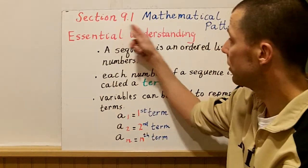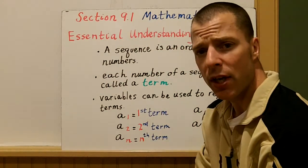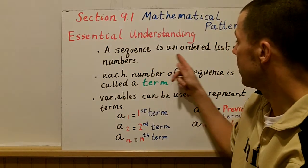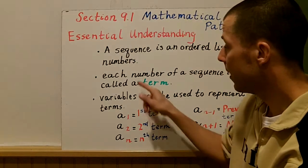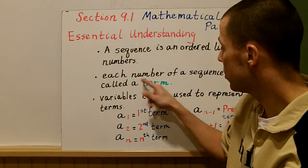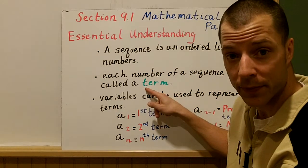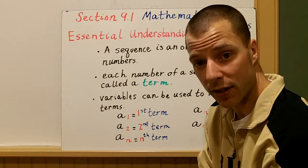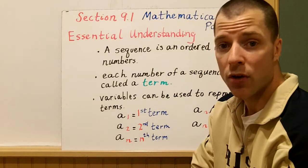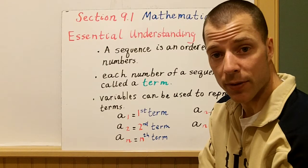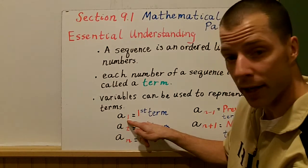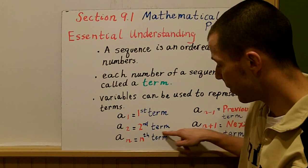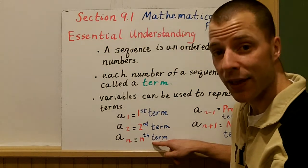The first section is called Mathematical Patterns. Here's what's important: number one, a sequence is just an ordered list of numbers. Number two, each number of a sequence is called a term. And finally, these terms can be represented by variables. Most of the time we use 'a' as the variable. So a sub 1 is the first term, a sub 2 is the second term, and a sub n is the nth term.